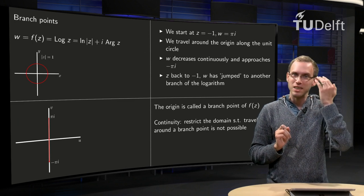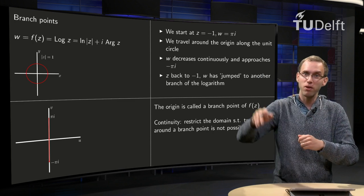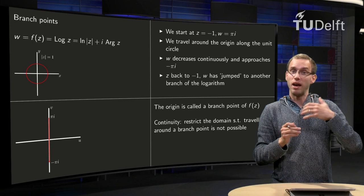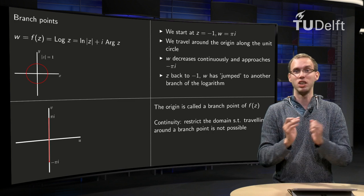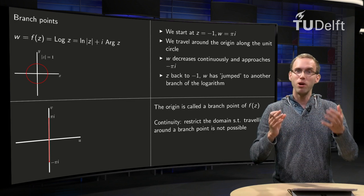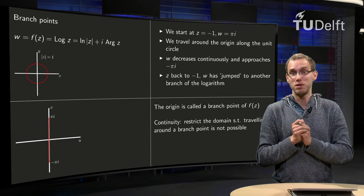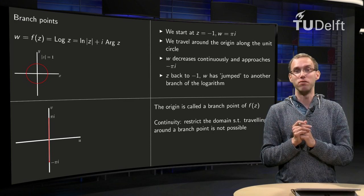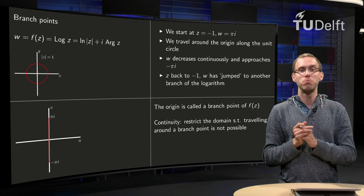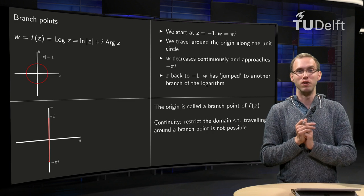The origin is a special point of the function f of z. If we travel around the origin in the domain, our function makes a jump in the codomain, it's not continuous anymore. Points with this special property have a specific name. Those points are called branch points of a function. And those branch points are the source of quite some trouble, because this is obviously something we do not want.